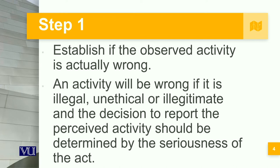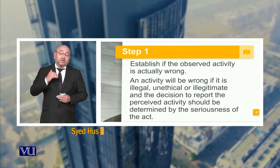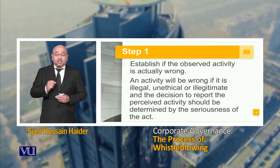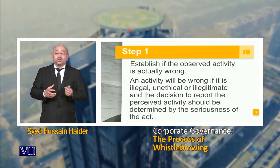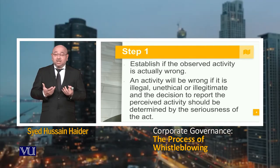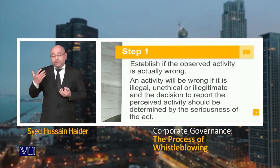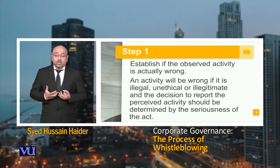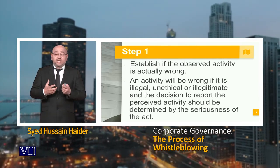It is very important to establish if the observed activity is actually wrong. Whistleblowing is based upon observation and it must be ascertained that the activity is actually wrong — not merely a small deviation or minor flexibility, but actually malafide, with bad intention. An activity will be wrong if it is illegal, unethical, or illegitimate. The decision to report the perceived activity should be determined by the seriousness of the act.